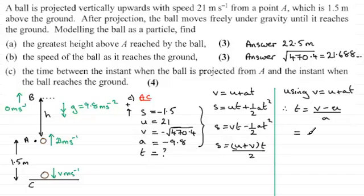So what we've got for T then is V which is minus root 470.4. So minus the root of 470.4. And then we've got minus U. U is 21 so we've got minus 21 there. And this is all divided by A which is minus 9.8.